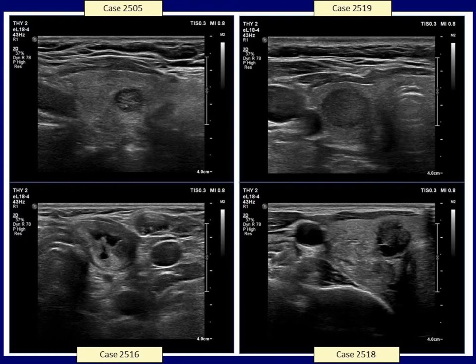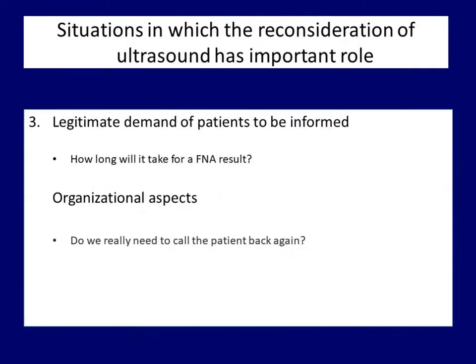A few thoughts about organizational issues. Each investigative team has a different practice. At the same time, a critical point significantly determines the turnover of the unit: whether examining a single patient requires two appearances or just one. In most cases, an experienced investigator can give a very accurate estimate of what can be expected from cytology. With two or three informative sentences at the end of the visit, you can save another personal consultation. This saves an unnecessary visit, which is important both for the patient and the investigator.